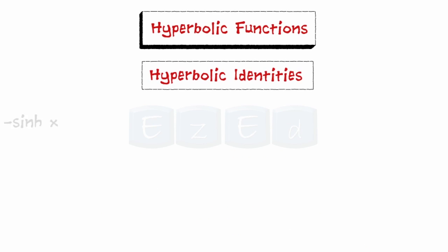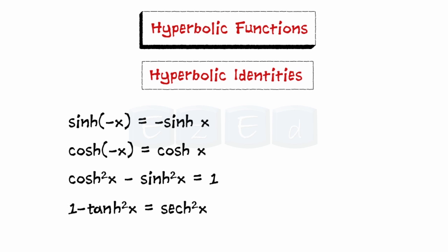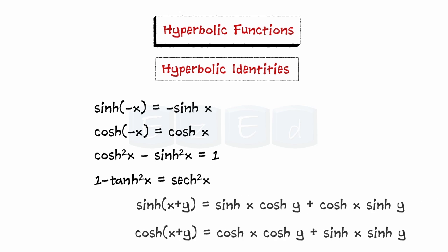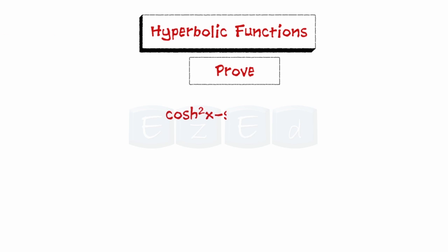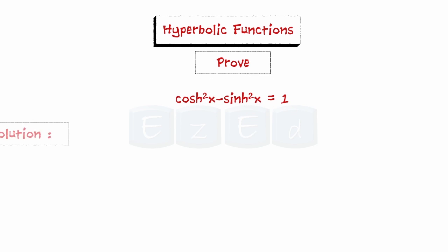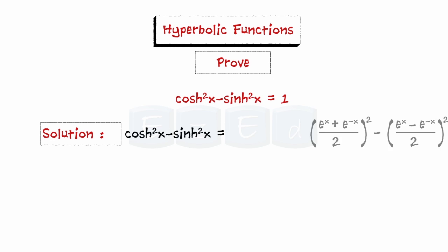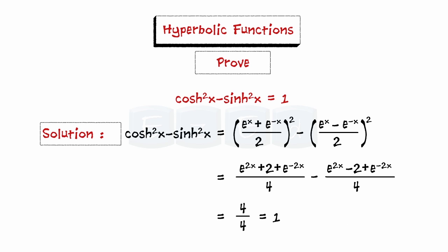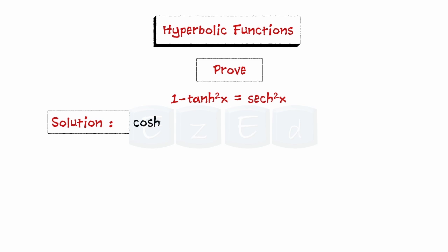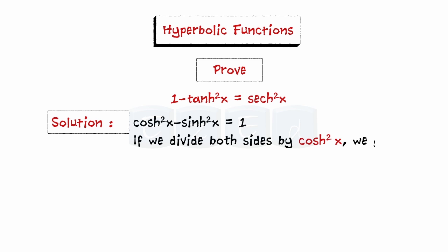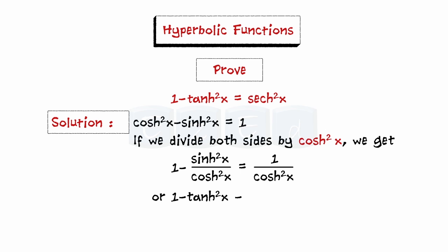We want to prove that cosh²x − sinh²x = 1. Starting with the definitions of cosh and sinh and simplifying, we get 1. Next, we prove that 1 − tanh²x = sech²x. Dividing both sides of cosh²x − sinh²x = 1 by cosh²x and simplifying gives 1 − tanh²x = sech²x.